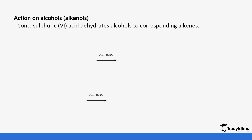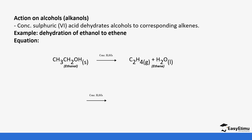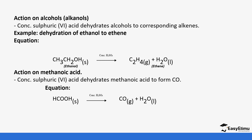It also reacts with alcohol — it dehydrates alcohol to form alkenes. This is covered in organic chemistry: ethanol undergoes dehydration by concentrated sulfuric acid as a dehydrating agent to form ethene, and water is given off. It also reacts with methanoic acid, as in the preparation of carbon monoxide (CO): it dehydrates methanoic acid to form carbon monoxide (CO) and water is given off.